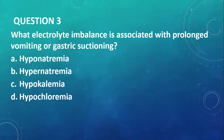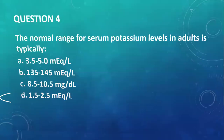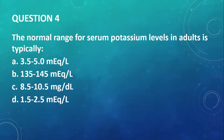Question number three: what electrolyte imbalance is associated with prolonged vomiting or gastric suctioning? When you're vomiting, you're losing a lot of HCl, so what will be affected will be chloride — you have hypochloremia. Question number four: the normal range for serum potassium levels in adults is typically 3.5 to 5.0 millimoles per liter.